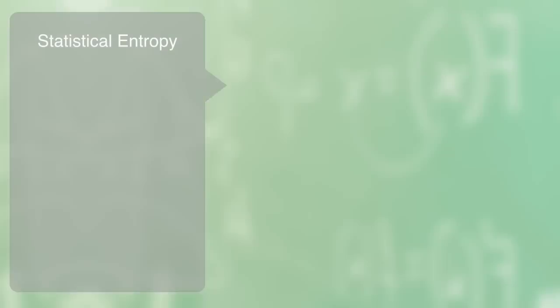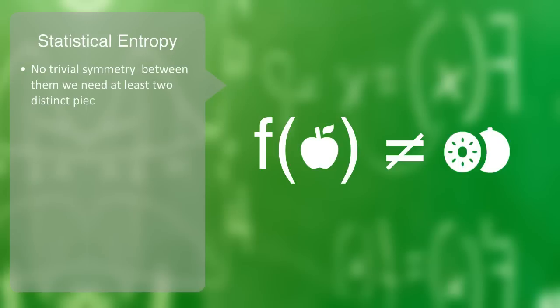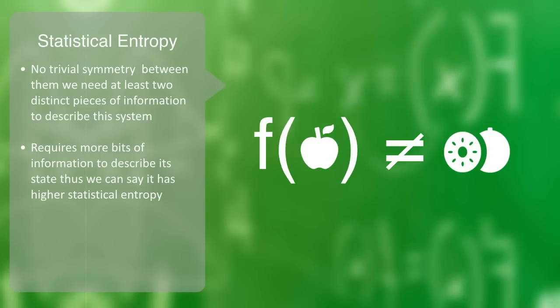Now say instead of having two coins, we had an apple and an orange. Well, there is no transformation we know of that can map an apple to an orange. They are different things. There is no trivial symmetry or order between them and thus, we need at least two distinct pieces of information to describe this system. This second system requires more bits of information to describe its state. Thus, we can say it has a higher statistical entropy.